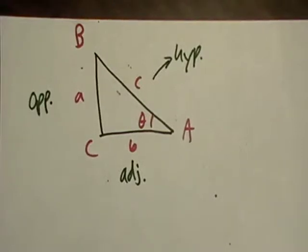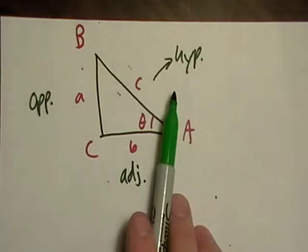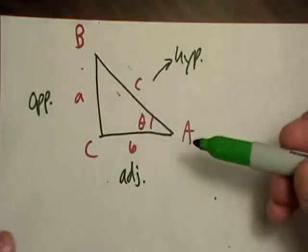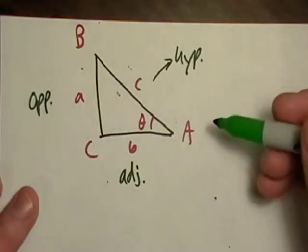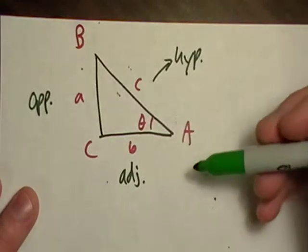Just to get you familiar with a couple of trigonometry terms, you get the hypotenuse of the triangle. That's just the largest side of the triangle.